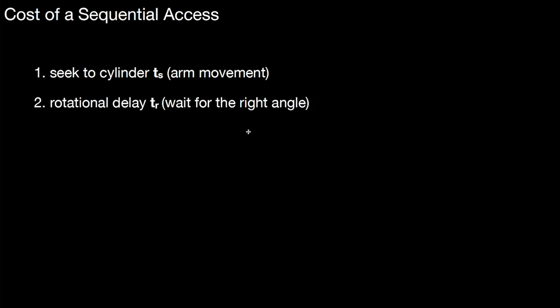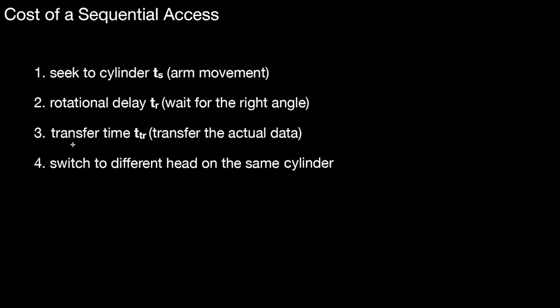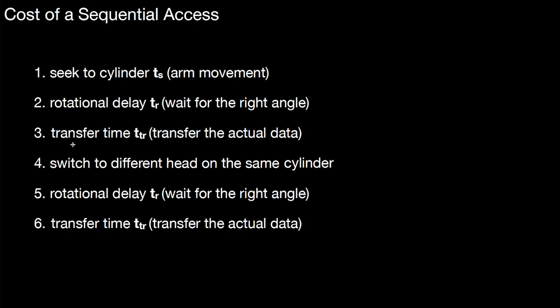You can determine the cost of a sequential access. First you seek to the cylinder, the arm movement. Then there's rotational delay again, usually half the time it takes to rotate a platter. Then there's transfer time for the entire track. When finished reading the track, you switch to a different head on the same cylinder, then rotational delay again, then transfer time. You repeat this, switching through all heads on the same cylinder. Only when done with that, you switch cylinders, seeking again to the adjacent cylinder, and continue until finished reading.